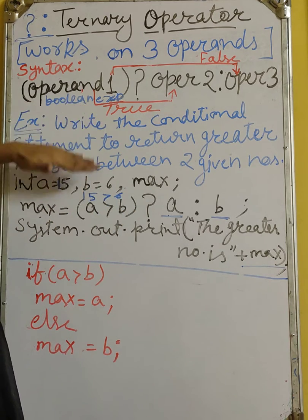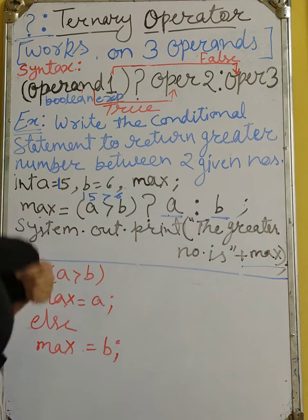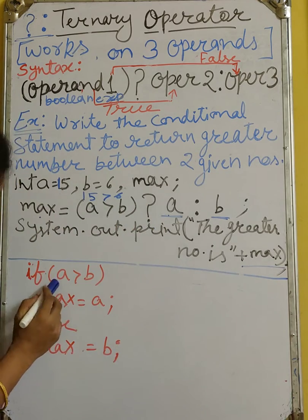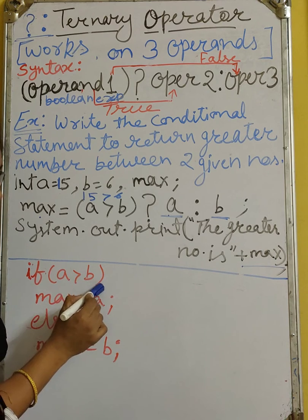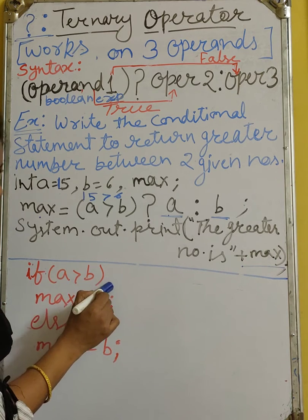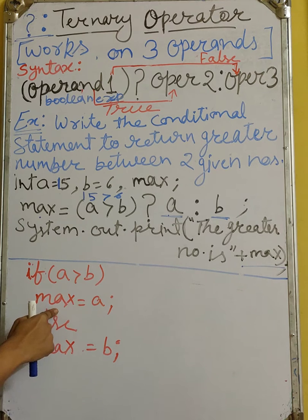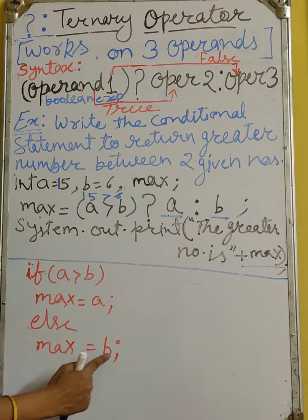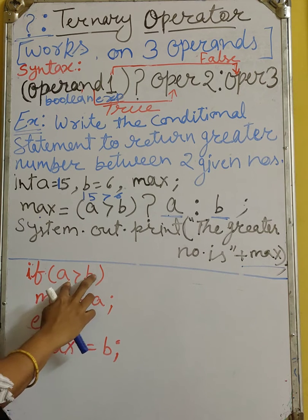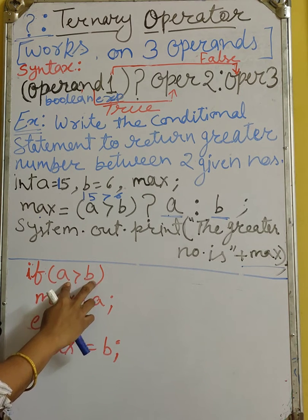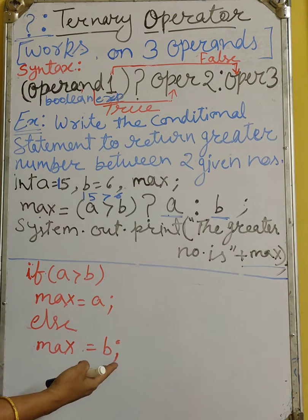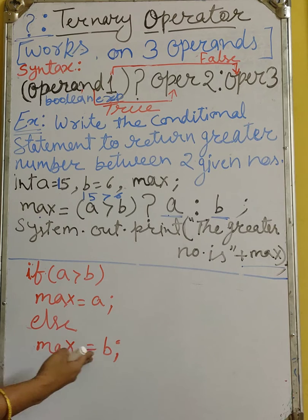So here, if I want to write down this question using if-else, what I would have to write: if A greater than B, then A will be max. Otherwise, in the else part, I will write max equals to B. Means if A will not be greater than B, then B will be greater, so max equals to B.